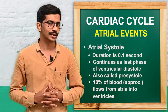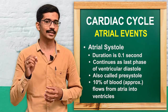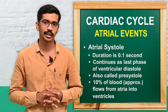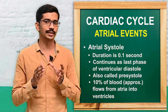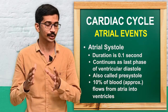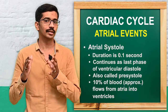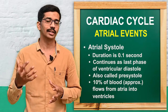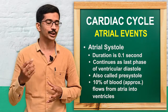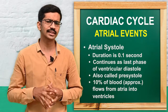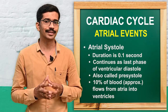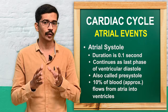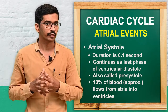Welcome to the atrial events. There is an atrial systole and atrial diastole. Coming to atrial systole: the length of atrial systole is approximately 0.1 seconds. This atrial systole continues as the last stage of ventricular diastole. It is otherwise called pre-systole, and approximately 10 percent of blood flows from atria into ventricle during this stage.